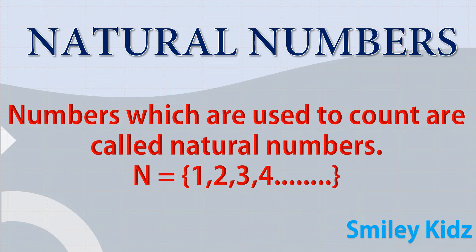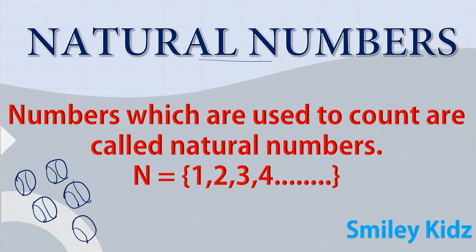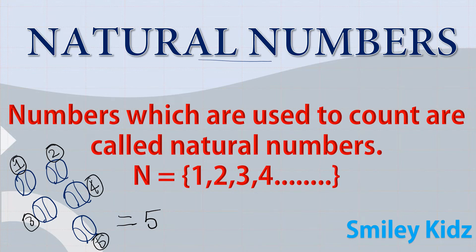Before knowing about real numbers, we should know about natural numbers, whole numbers, integers, and rational numbers. The numbers which are used to count are called natural numbers. I have drawn a few balls on the screen — how many balls are there? You would say there are five balls: one ball, two balls, three balls, four balls, and five balls. You started counting from one. Natural numbers are also called the counting numbers.